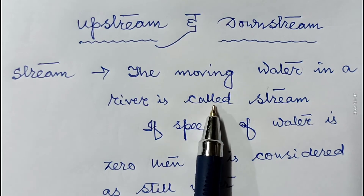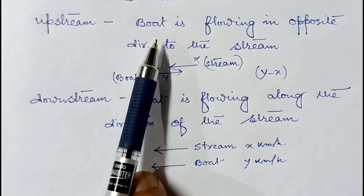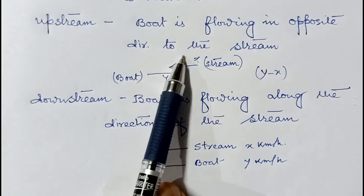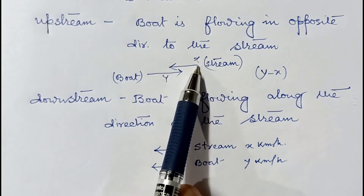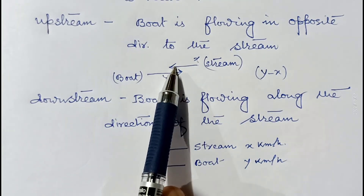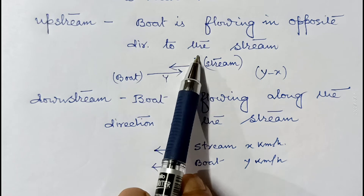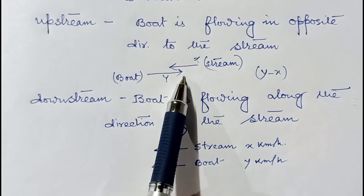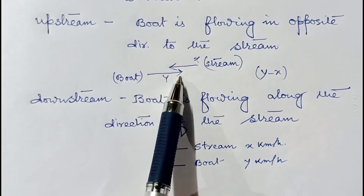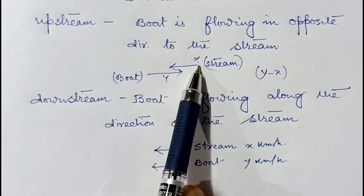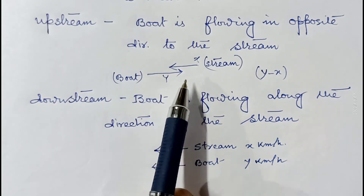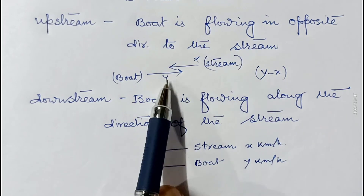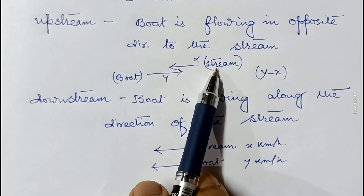If it is given as 'stream' then water is flowing with a certain velocity. In the case of upstream, the boat is flowing in the opposite direction to the stream. Suppose water is flowing in one direction with a speed of x kilometer per hour, and the boat is moving in the opposite direction — in that case the net speed will be y minus x, because the speed of the boat must be more than the speed of the stream.